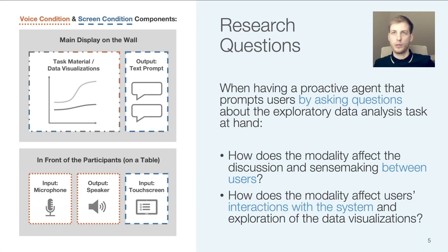Here is an overview of what the conditions involved. In both conditions, the visualizations were presented in the same way on a large display on the wall. How the conditions differed was in how the system and the participants interacted with each other. Participants could provide a request through speech in the voice condition, and in the screen condition they did so through a screen interface. The system provided its outputs or the prompts in the voice condition through synthesized speech, and in the screen condition as text messages next to the data visualizations.